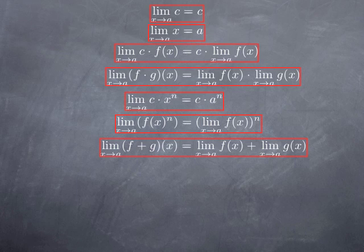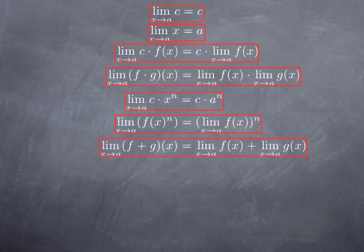Another general rule is that the limit of a sum is the sum of the limits. This is not hard to believe: if you have something approaching 3 and something approaching 2 at the same place — say f is approaching 3 when x is approaching 1, and g is approaching 2 when x is approaching 1 — then f plus g should approach 5. Nothing surprising here, but let's see how to prove this using the epsilon-delta definition.